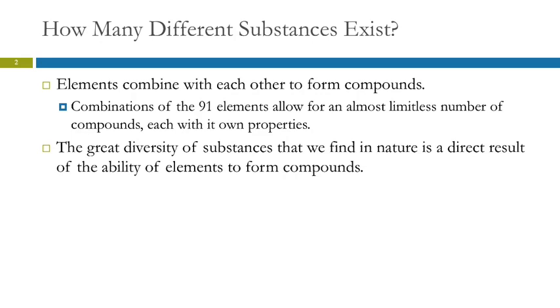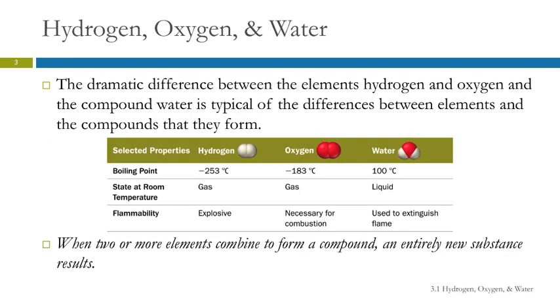Let's look at hydrogen and oxygen forming water. This table gives some properties of hydrogen, oxygen, and water. Hydrogen and oxygen are both gases at room temperature; their boiling points are well below zero degrees Celsius. Hydrogen gas is explosive. Oxygen gas does not itself burn, but is necessary for combustion, and in the presence of oxygen, there are lots of things that will burn.